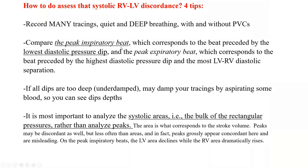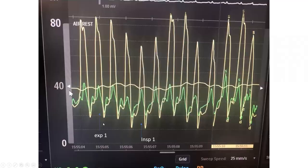Summary of the four tips: record many tracings in quiet and deep breathing, with and without PVCs; pick the peak inspiratory beat based on the lowest diastolic dip and peak expiratory beat based on the highest diastolic dip; if all dips are too deep due to underdamping, aspirate some blood to damp the tracing; and analyze the systolic area bulk, not the peaks.